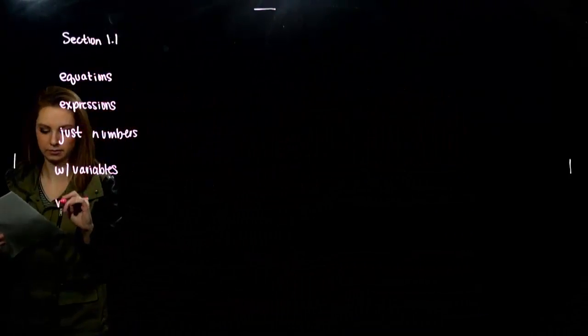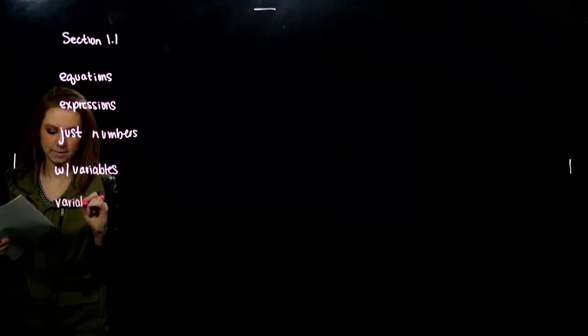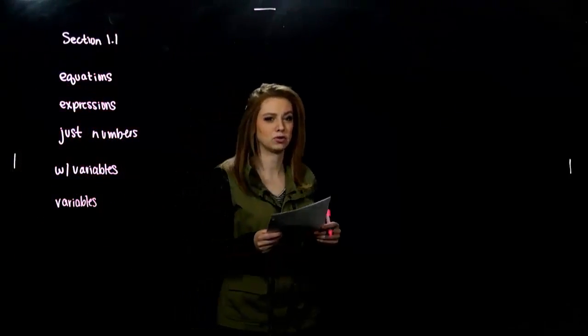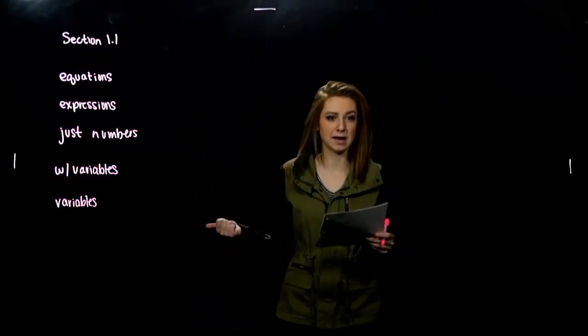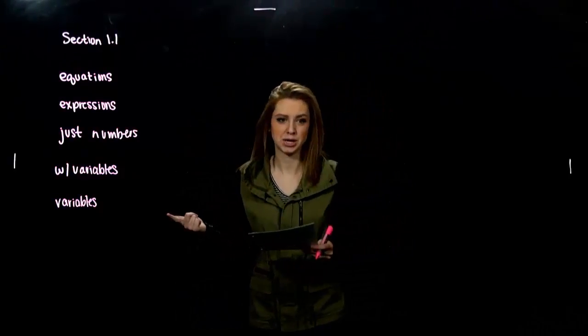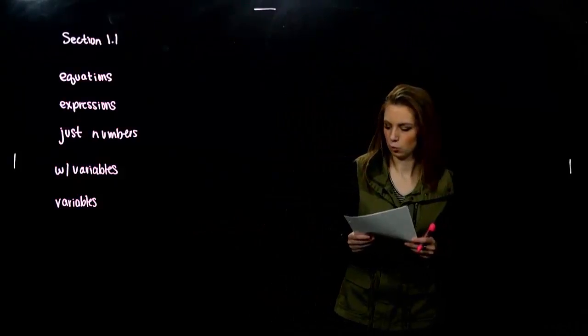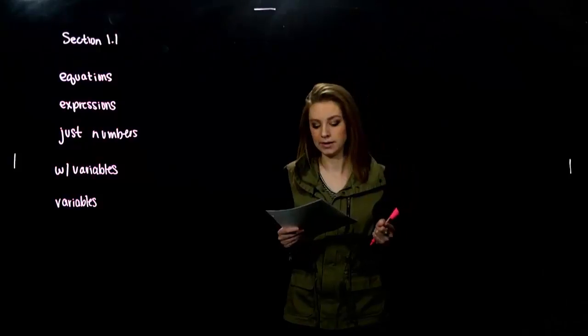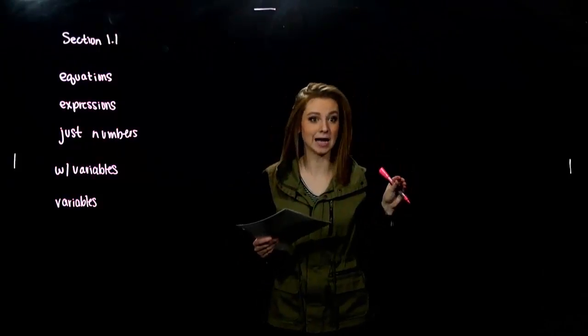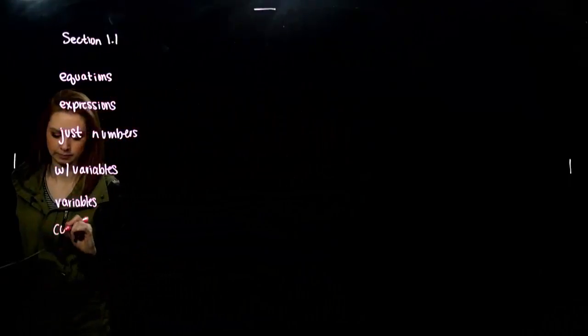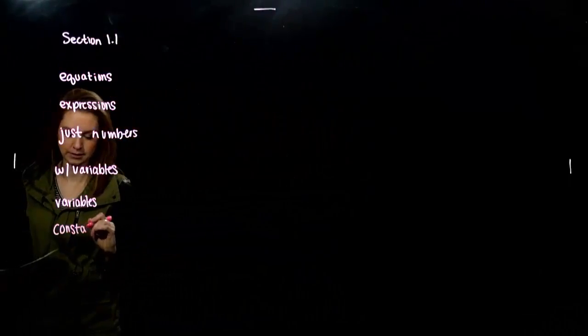Variables are dynamic. Their values change with respect to time, with respect to position. It just depends on the context of the problem. When a letter stands for just one number, it's unchanging, it's constant. We call it constants.